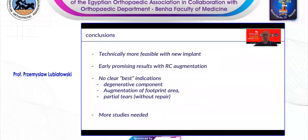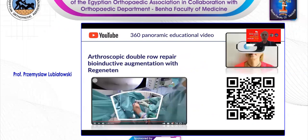The conclusions are that with the new implants it is technically more feasible and easier to use as an arthroscopic device, with some early promising results with cuff augmentation. However, there are no clear best indications yet — probably it could be applied for the general component when we would like to augment the footprint area and maybe for poor healers as well. However, we need more studies to prove the efficiency of the method. You may scan this QR code which will lead you to our YouTube channel where you can see 360-degree panoramic educational video of this technique.